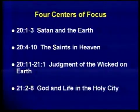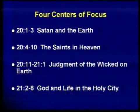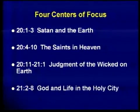The second view or perspective has to do with a view of the saints during the thousand years — the righteous, the saved — found in Revelation chapter 20, verses 4 through 10. The center of focus is upon the righteous saints who are saved during the thousand years. The third view of the Millennium is found in Revelation chapter 20, verse 11 through chapter 21, verse 1. The center of focus is on the wicked, the unrighteous, during and after the thousand years. And finally, the fourth perspective is Revelation chapter 21, verses 2 through 8, with the center of focus on the Holy City and God.